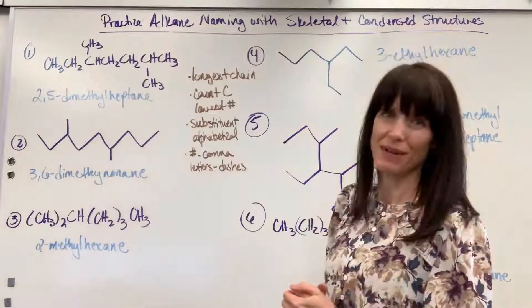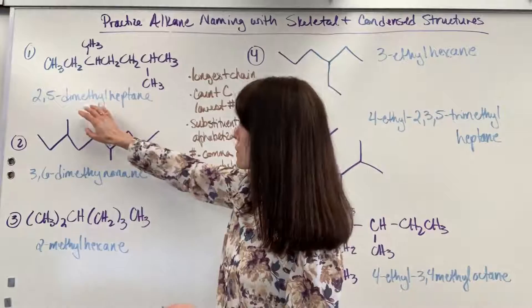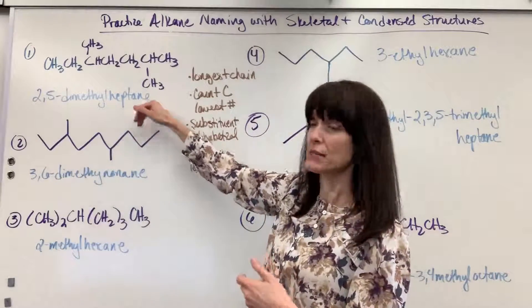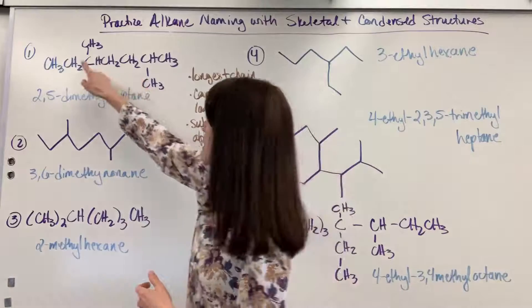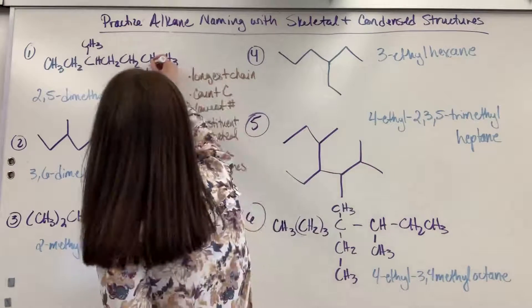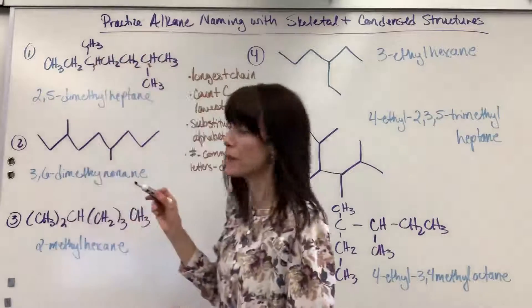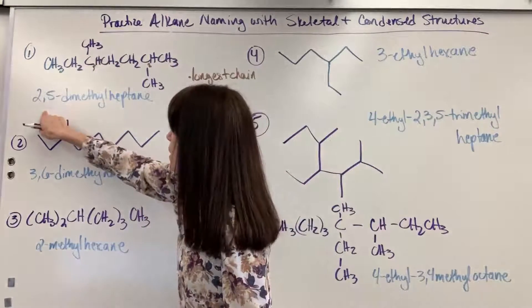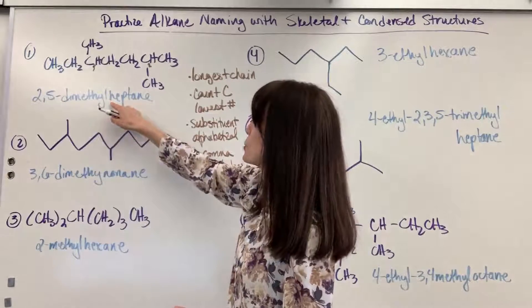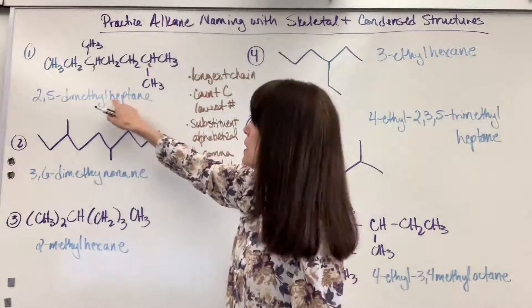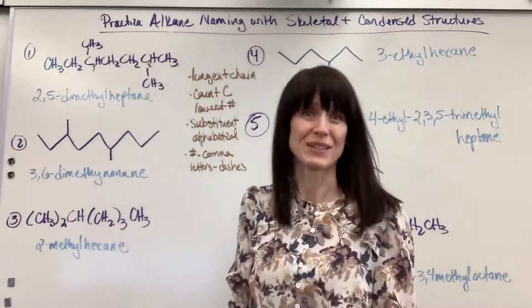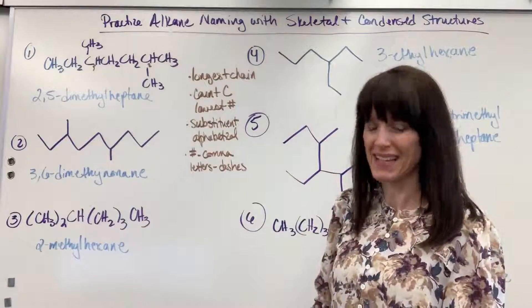The two and five are going to be our smallest numbers, so let's write those substituents down — remember we always end with that long chain. So we have two, five — comma, dash because we start a letter — dimethyl, and my longest chain had seven carbons, so heptane because they're all single bonds. So two, five-dimethylheptane. Nice.